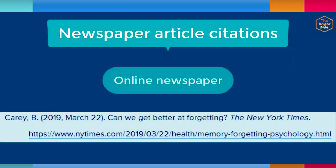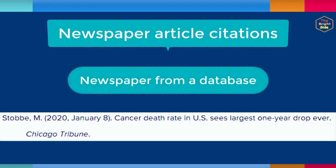Newspaper articles also follow a similar format. If the newspaper article is from an online newspaper that has a URL, include the URL at the end of the reference. Again, if the volume, issue, or page numbers are missing, omit these elements from the reference. If the newspaper article is from a library database, provide the title of the newspaper and any volume, issue, and page numbers that are available. Don't include database information in the reference. If the article does not have volume, issue, or page numbers, the reference may end with the title of the newspaper.